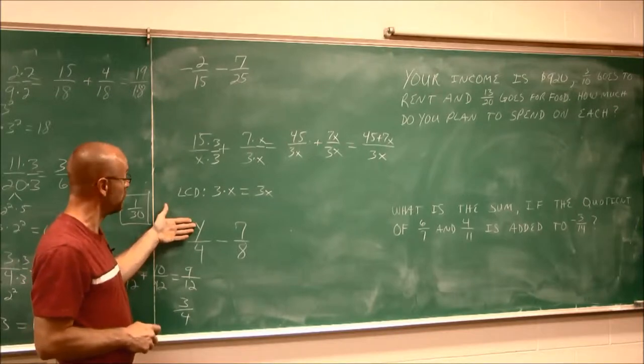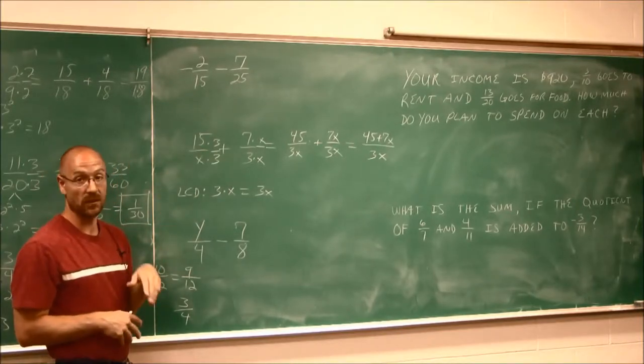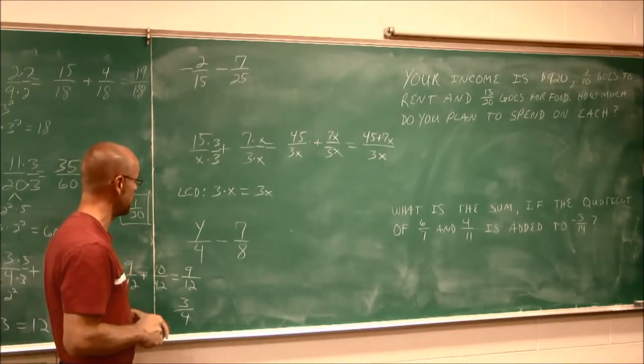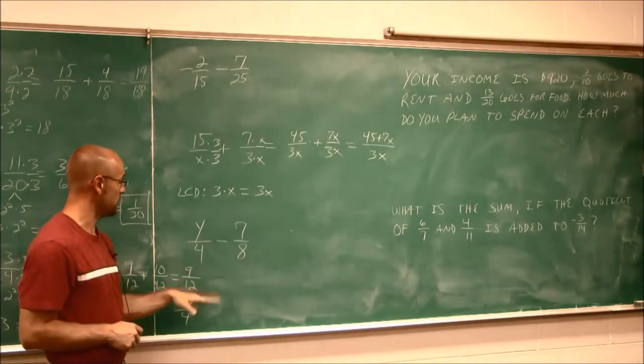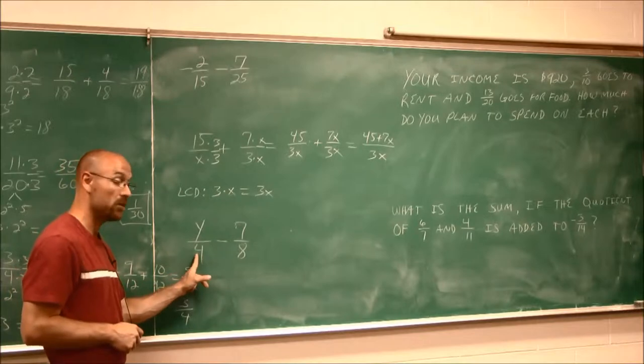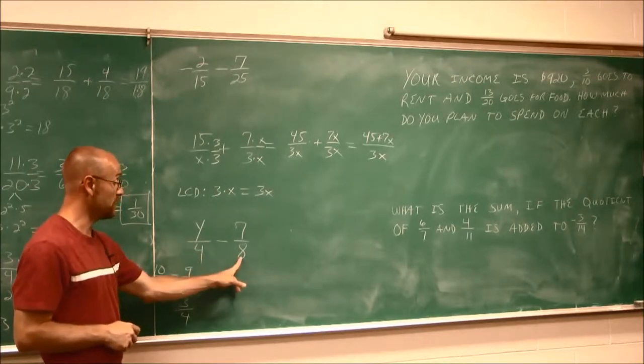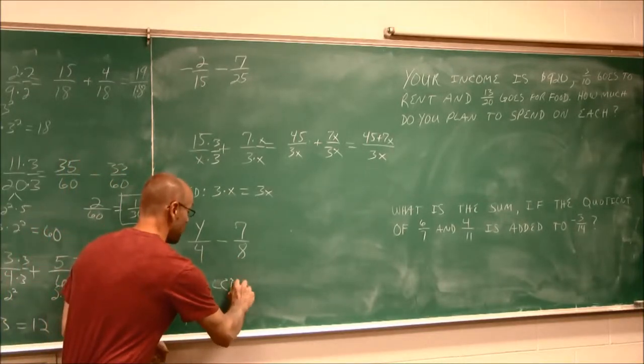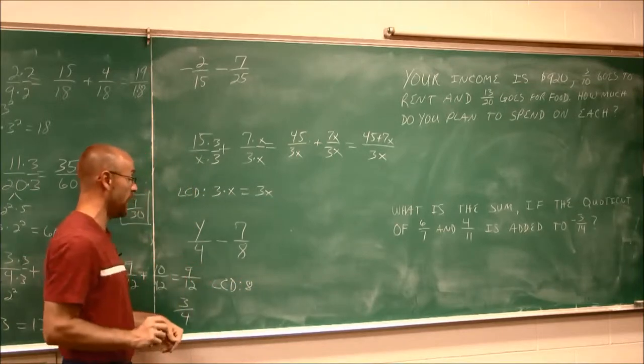What if we have the variable in the numerator? Well, that's actually easier than having variables in the denominator. So I'm going to assess this and look. Well, 4 and 8, I recognize 8 to be a multiple of 4. So this means my LCD is 8. I've already found my LCD to be 8.